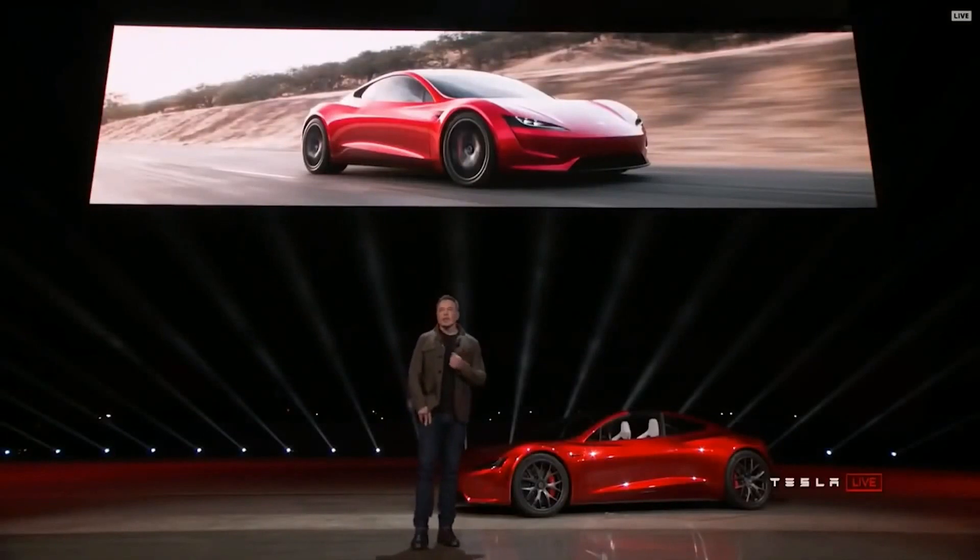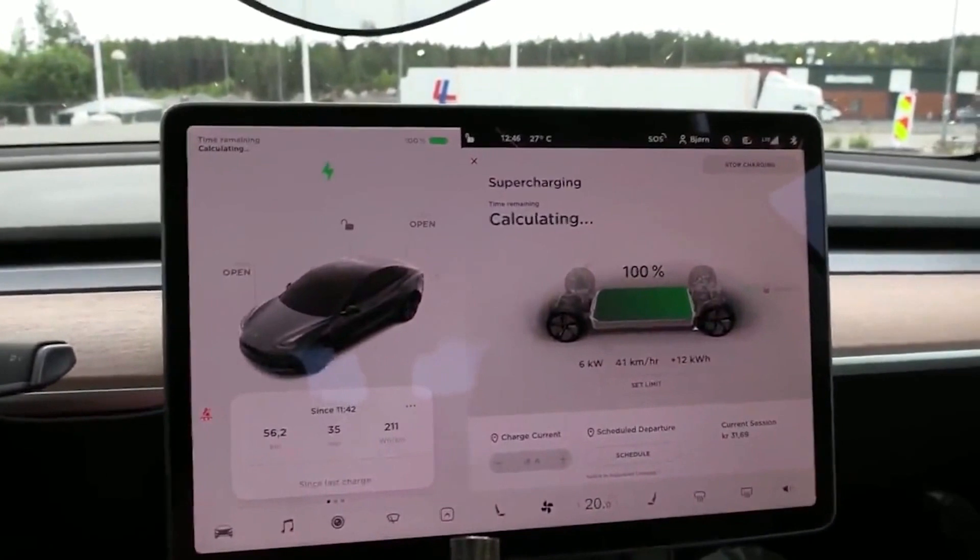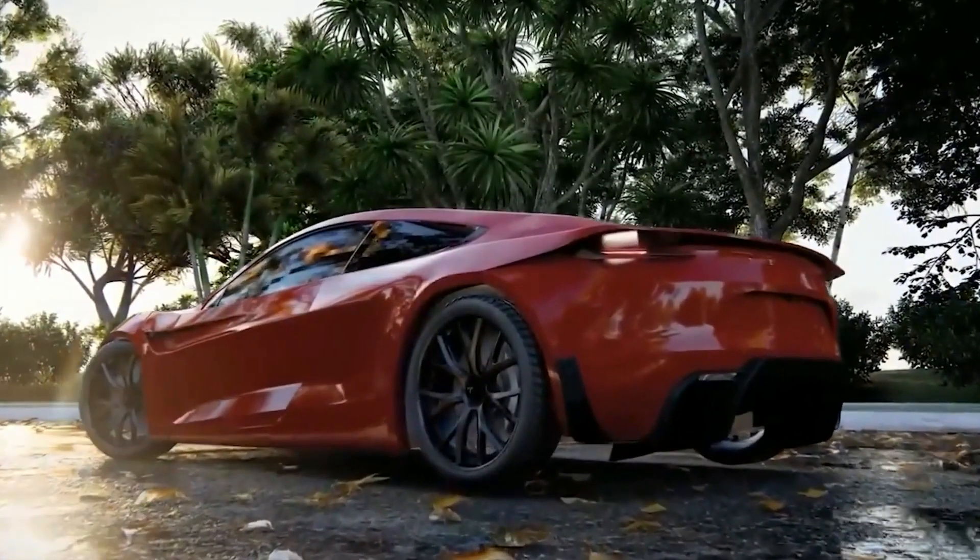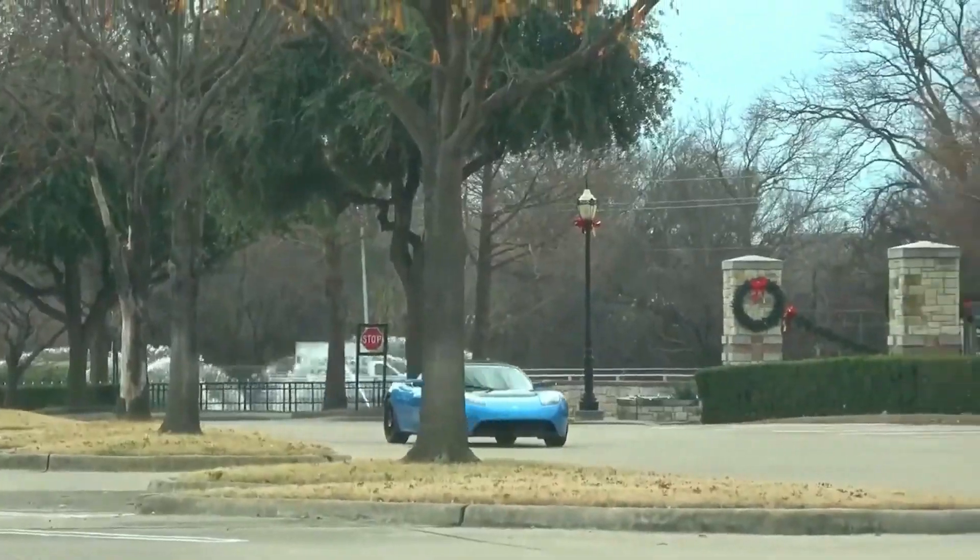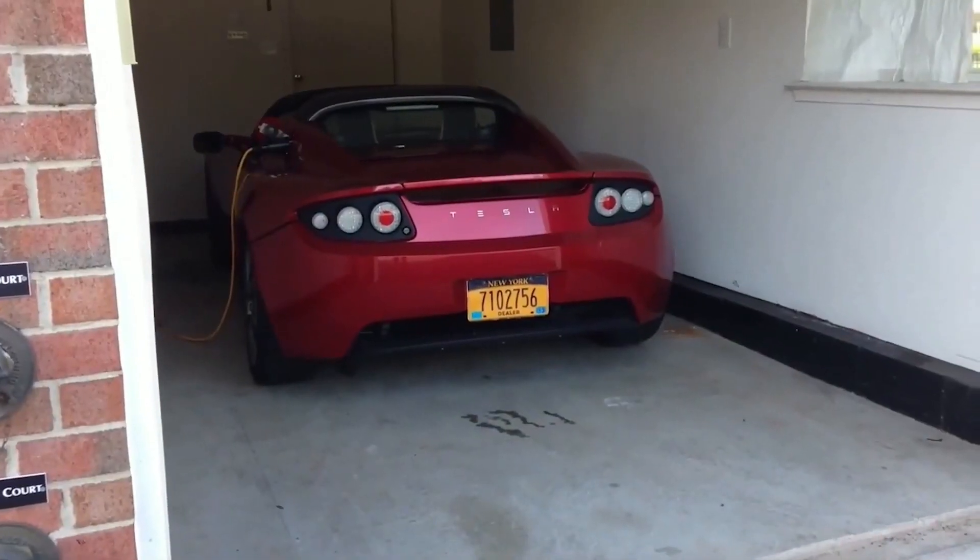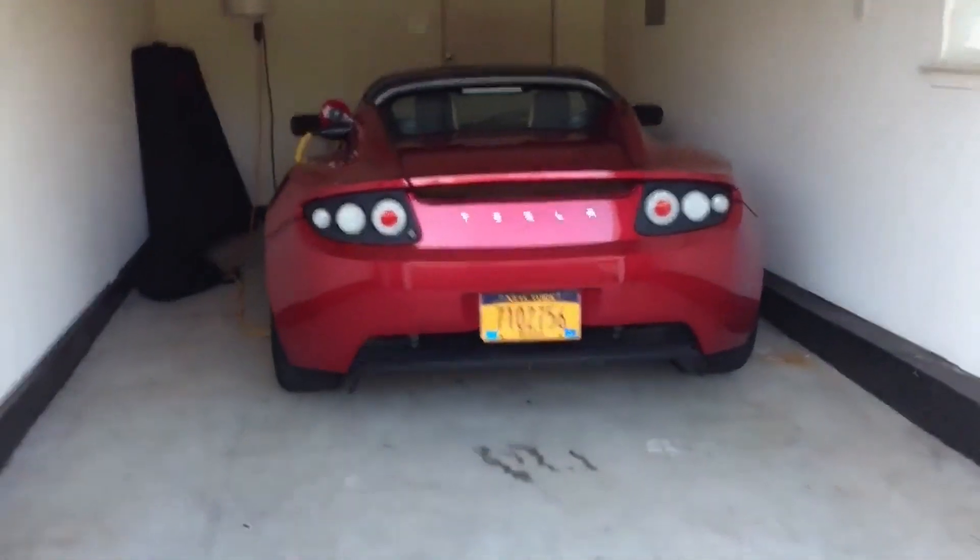Electric vehicles were severely limited in range before Tesla showed the world what lithium-ion batteries could achieve by placing them in its first car, the Roadster. The Roadster demonstrated that an electric automobile, particularly one with great performance, could travel more than 200 miles before needing to be recharged.